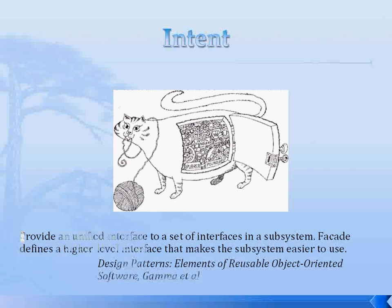This is Facade, as the name suggests. It is trying to provide a unified interface to a subsystem. When we start designing a system, we divide it into multiple subsystems to provide particular functionality, so that it's easier to assemble the system. The goal is to reduce the complexity of the entire system.